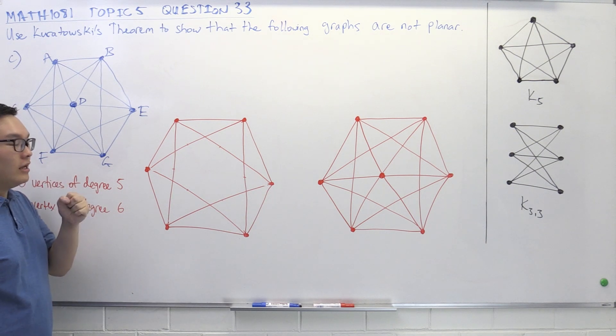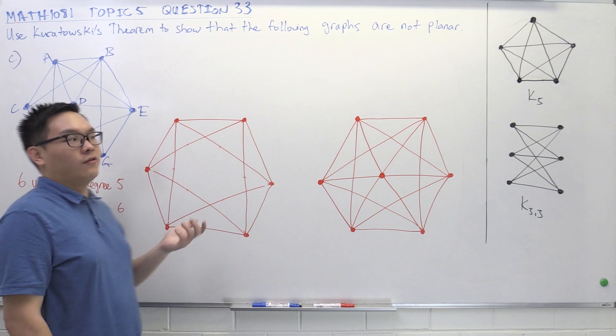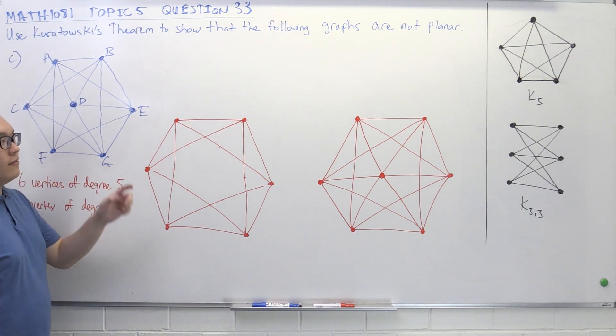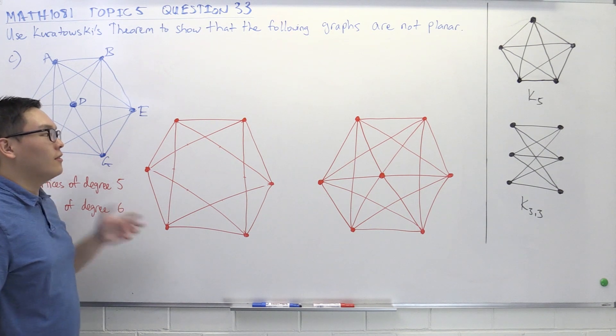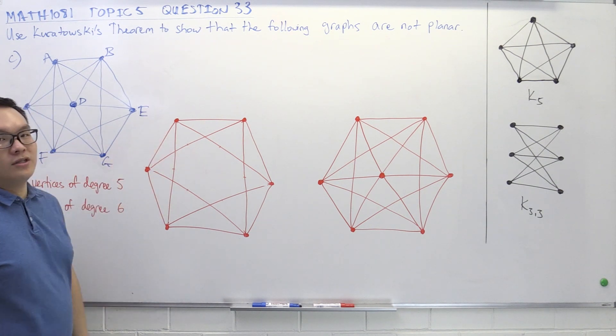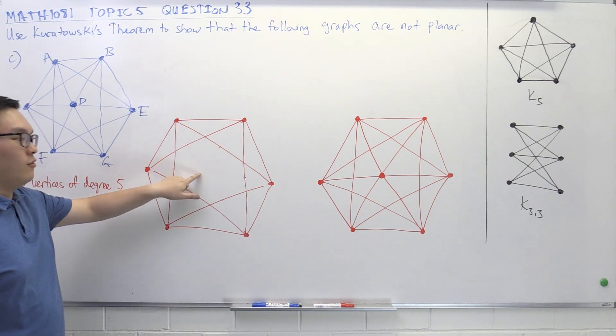But if I remove even just an edge, then I'm going to bring down the degree of two of the vertices, which is too many. All the more if I remove an entire vertex, then I'm going to bring down a lot of the degrees of the vertices to three. So it's not going to be a K5 if the trick is to remove the middle one.